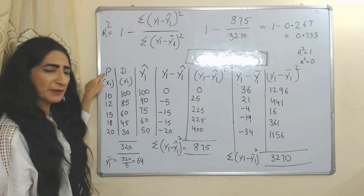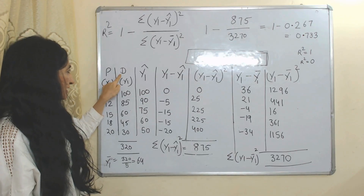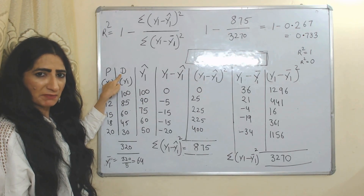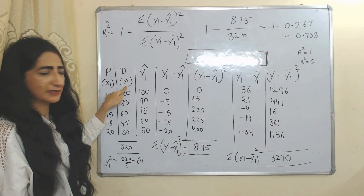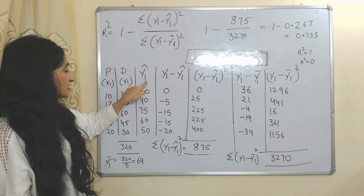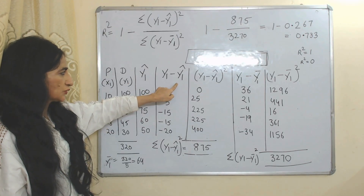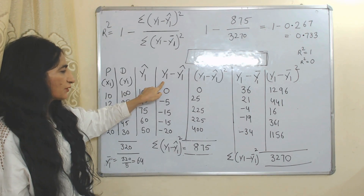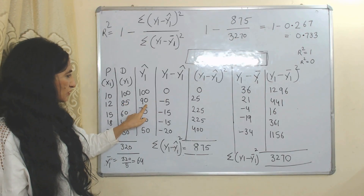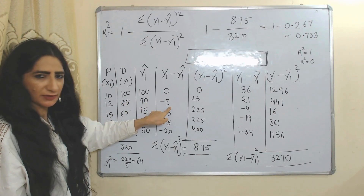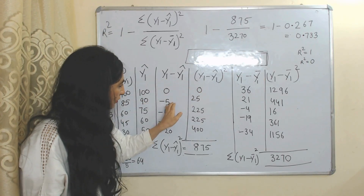Here we have independent variable P — this is the value of X1, our independent variable — and the dependent variable is demand, so Y1 is the actual observed value of our dependent variable, and Y1-hat is the predicted value. Now we calculate the residuals by subtracting the predicted value from the actual observed value. For example, 90 minus 85 equals minus 5.